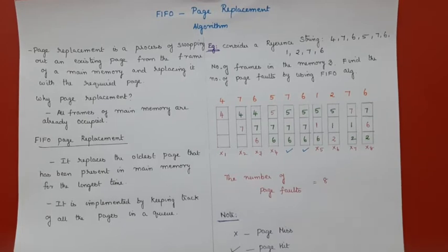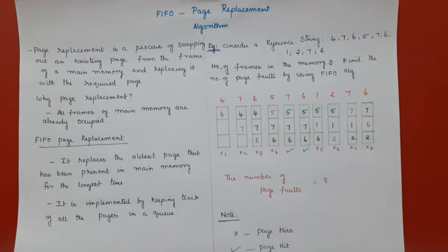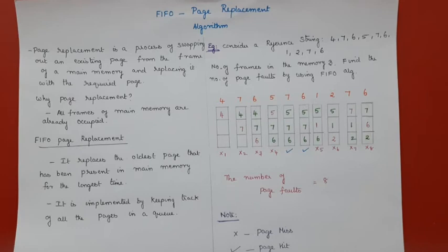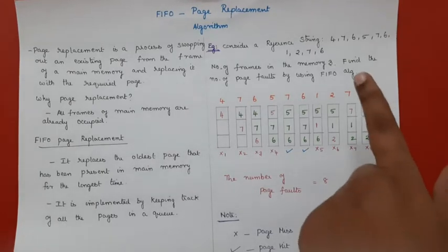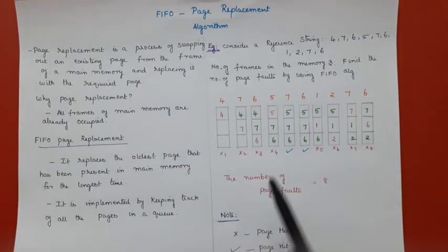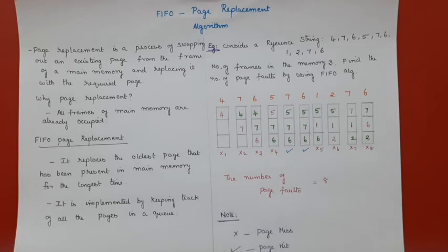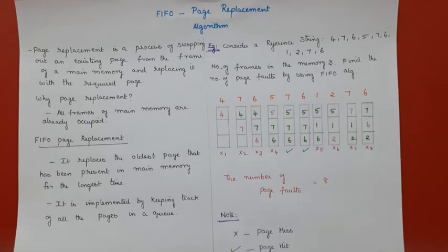Using the FIFO algorithm, the oldest page is replaced. The oldest page here is 4, so I swap out page 4 and replace it with page 5. This is once again a page fault. The next page coming in is 7. Checking main memory — 7 is already available, so this is a page hit.